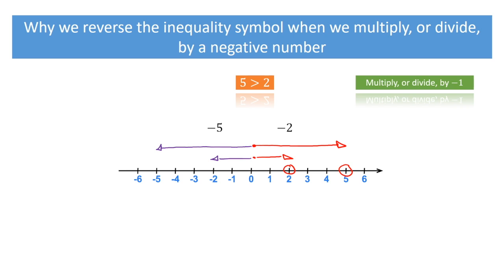And now, since 5 was further to the right than 2 was, negative 5 is going to be further to the left than negative 2 will be. And on the number line, what that's really telling us is that negative 5 is less than negative 2. And so, the inequality symbol has been reversed.